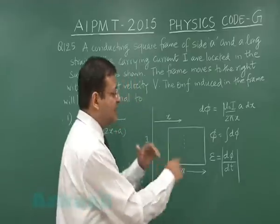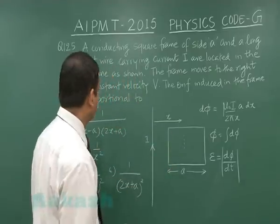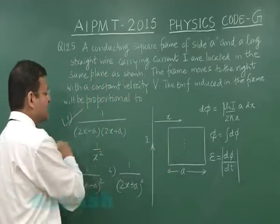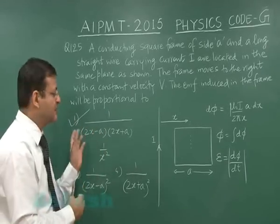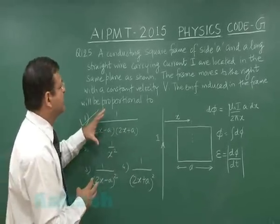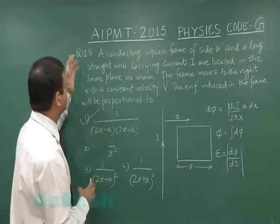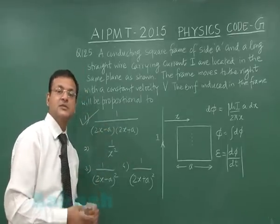And if you calculate then you will find that in your expression a term like this is appearing: 1 upon 2x minus a into 2x plus a. This will be in denominator. So this will be the answer, option 1 for the question 125.